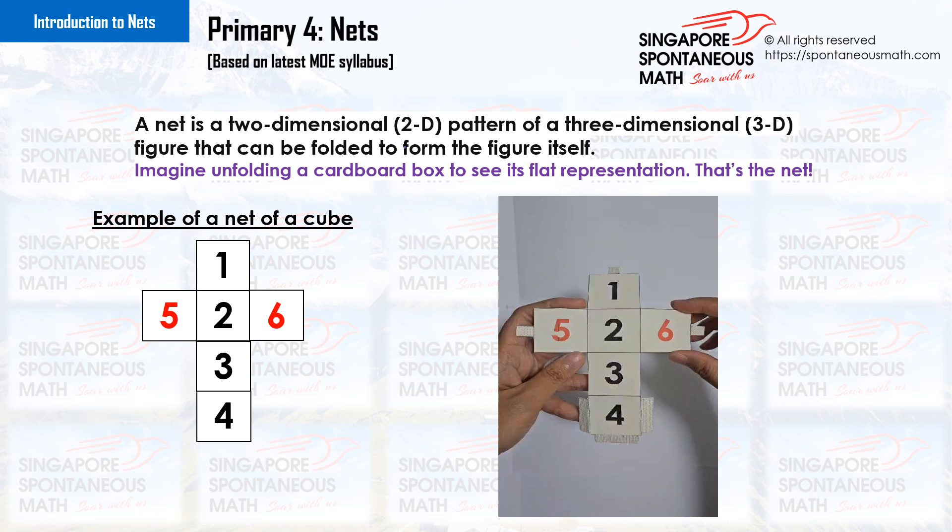A net is a two-dimensional pattern of a three-dimensional figure that can be folded to form the figure itself. Imagine unfolding a cardboard box to see its flat representation. That's the net.